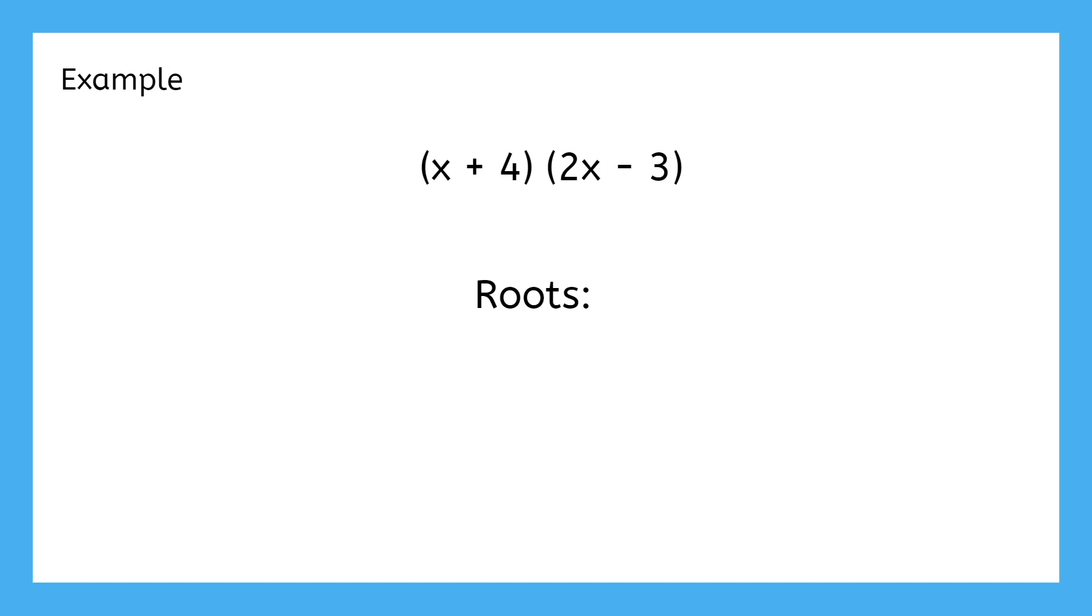So what are the roots of this function? The roots will be the values of x that can cause any factor to zero out. So let's take the factor on the left. We set it equal to zero and solve, finding that x is negative four. We can do the same with the second factor, which takes more steps, and eventually we get that x has to be three halves. These two values are the roots.